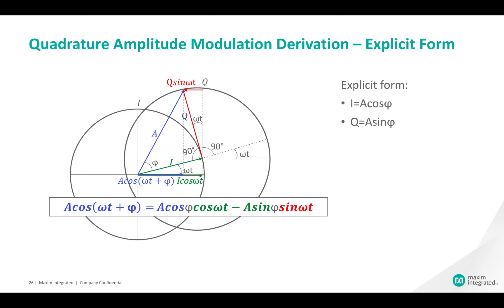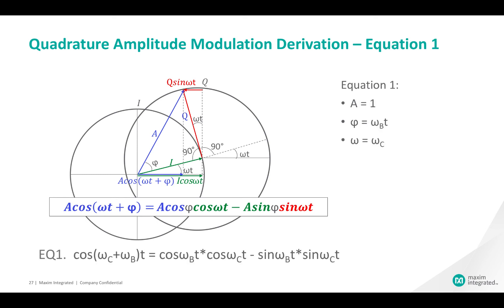With quadrature amplitude modulation, we can successfully preserve and transmit the baseband information of amplitude, frequency, and phase using amplitude modulation of two orthogonal carrier sinusoids with the baseband information. If we substitute a = 1, φ = ωb·t, and ω = ωc, we have the same equation we used in the previous section to simulate quadrature modulation in the frequency and time domains.